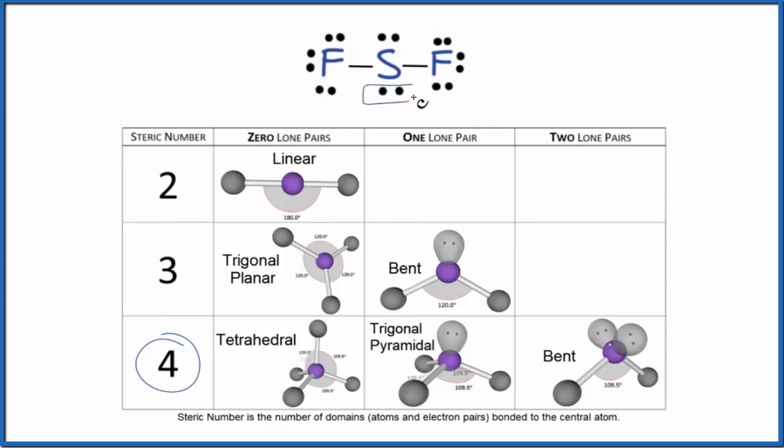Since we have two lone pairs, so we have four things and two lone pairs. We come over here, and we have a bent molecular geometry. The bond angles should be 109.5. These are the ideal bond angles.